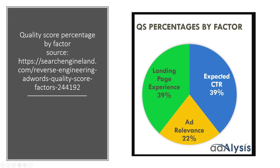I want to quickly show you the percentage breakdown of how Google calculates your quality score. The source of this image is from Search Engine Land. Basically, expected click-through rate and landing page experience each account for almost 40% of how Google calculates the quality score, and ad relevance is 22%. So if you can increase your expected click-through rate and do a good job optimizing your landing page, you're actually working to optimize those 80% of factors that Google takes into consideration when calculating a quality score.